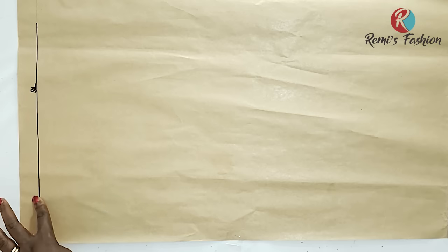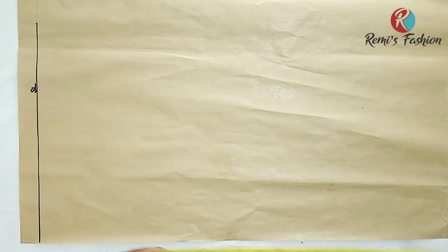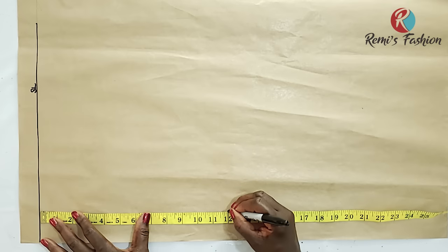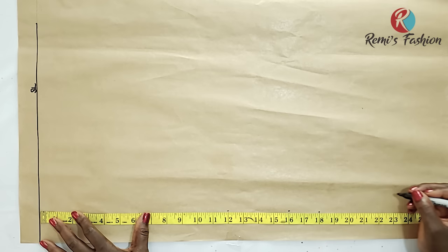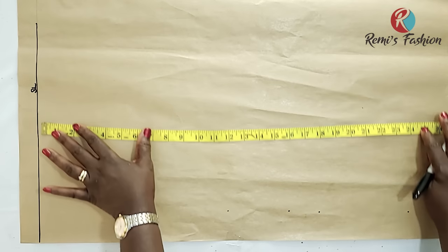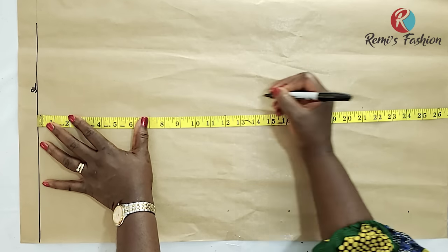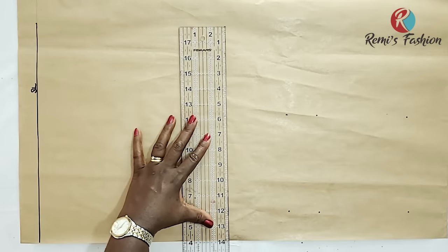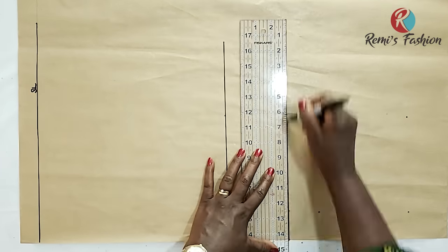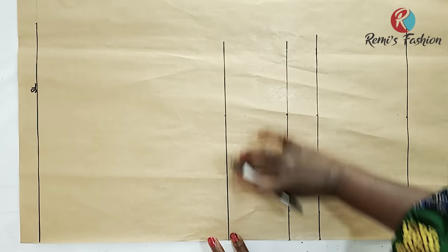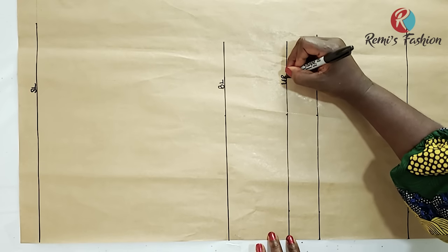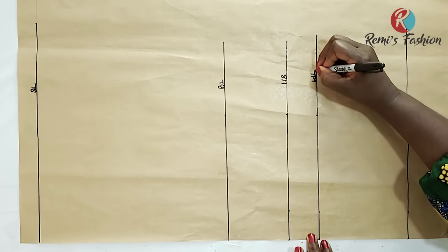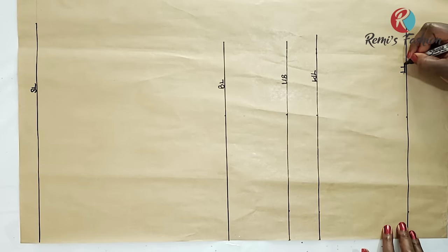From the shoulder line I'll measure: shoulder to bust is 12 inches, shoulder to under bust is 16 inches, shoulder to waist is 18 inches, and the corset length is 24 inches. I'll do the same on both sides and draw horizontal lines to connect the points. This is my shoulder line, already labeled. This is my bust line — I'll put BL here. This is my under bust line. This is my waistline, WL. And this is the length line of our corset.